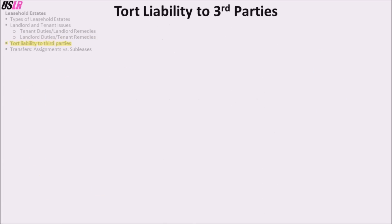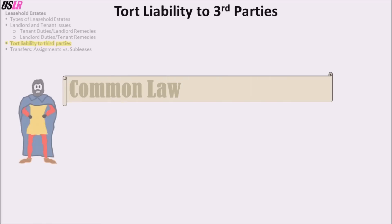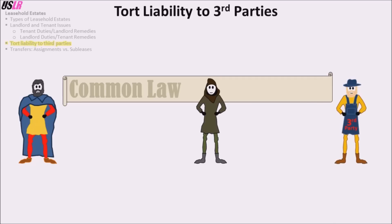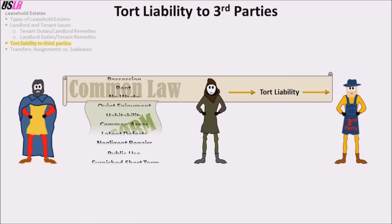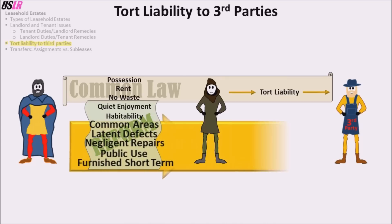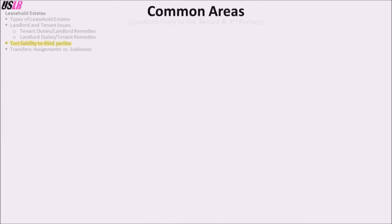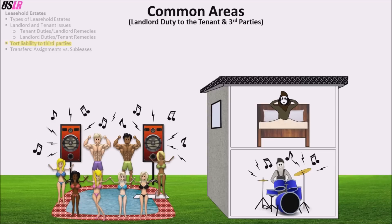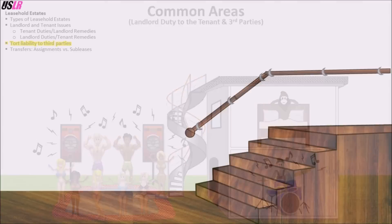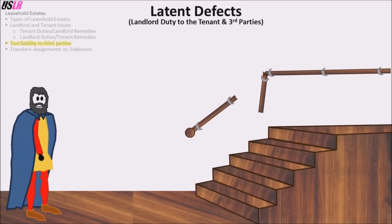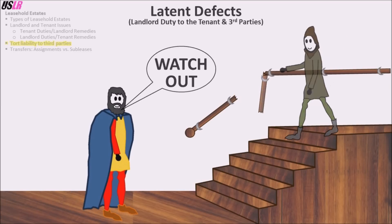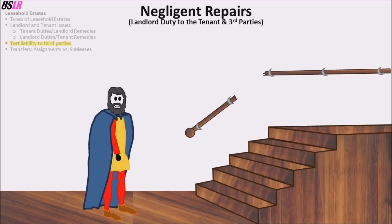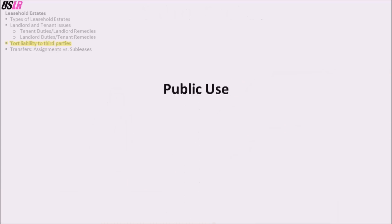Regarding leasehold estate tort liability to third parties: at common law the landlord had no duty to protect the tenant or the tenant's licensees and invitees. Thus in assessing tort liability to third parties on the property, the tenant is treated as the property owner and is held liable. Modern rules have greatly reduced the effect of this harsh rule by adding exceptions: the landlord is responsible for maintaining the common areas (e.g., hallways or staircases); the landlord must warn against latent defects that he knows or should know about; and regardless of whether the landlord has a duty to repair, if the landlord actually makes a negligent repair, he is liable.